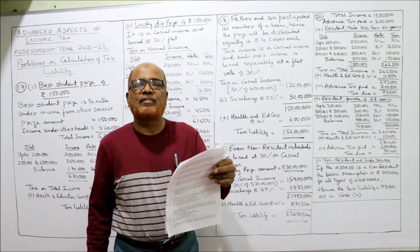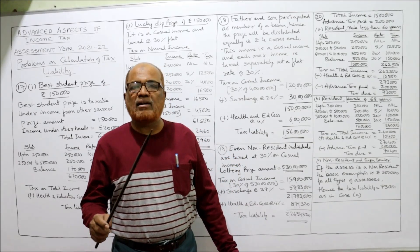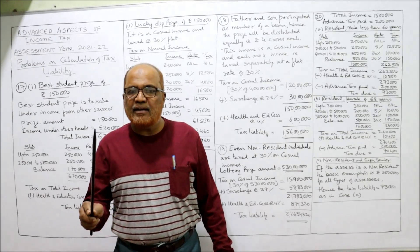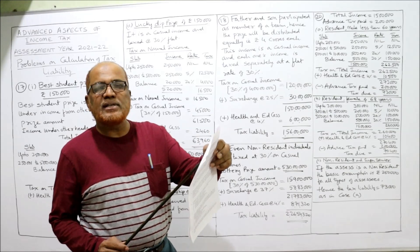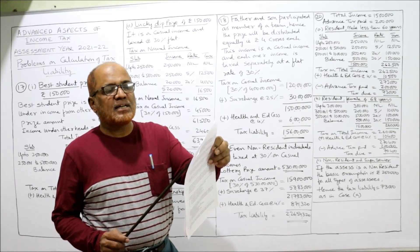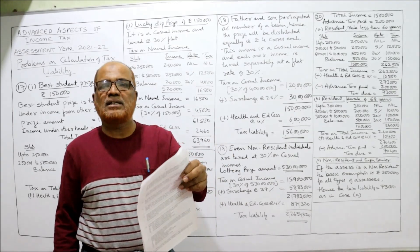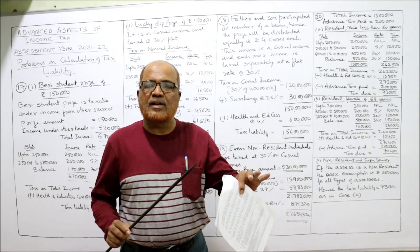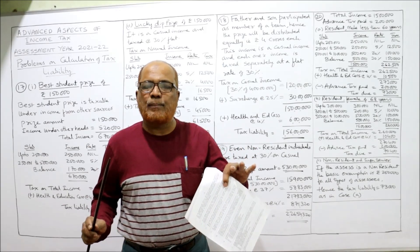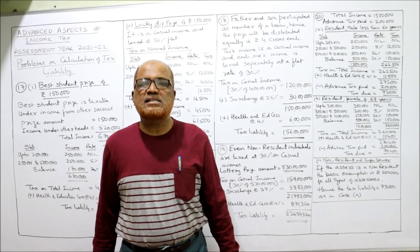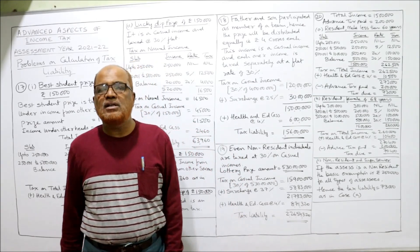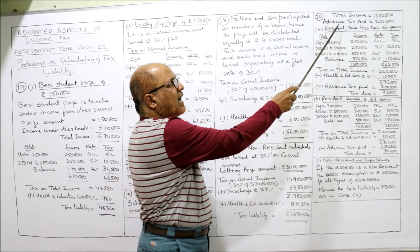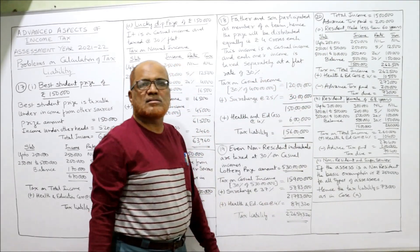Problem 20: Calculate tax liability of a person on total income of fifteen lakh; advance tax paid two lakh. The advance tax paid will be deducted after calculating tax liability. Three separate situations are given. Case 1: if the assessee is a resident male person of less than 60 years. For income tax purposes, male or female makes no difference — the same provisions apply. Less than 60 years means non-senior citizen; for non-senior citizens the basic exemption limit is two lakh fifty thousand.